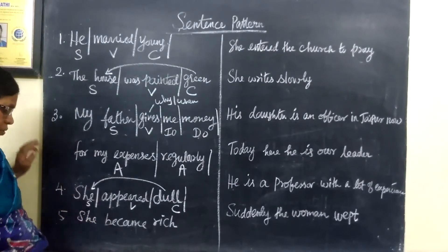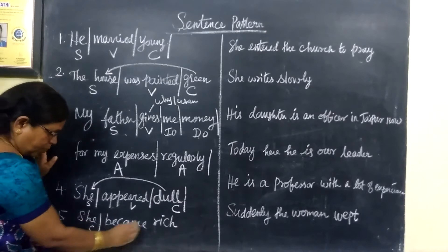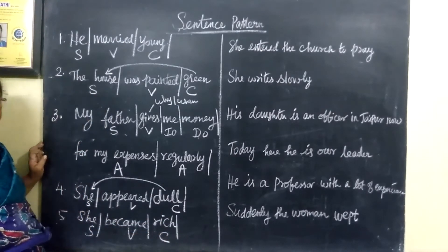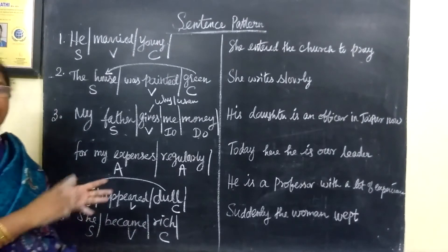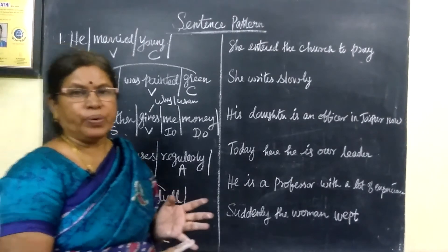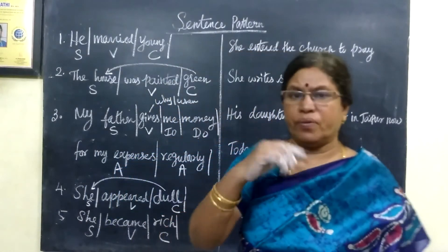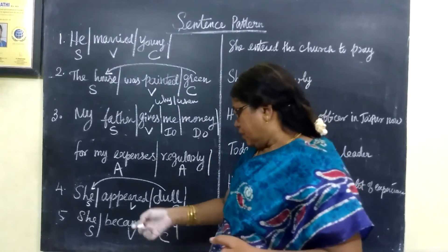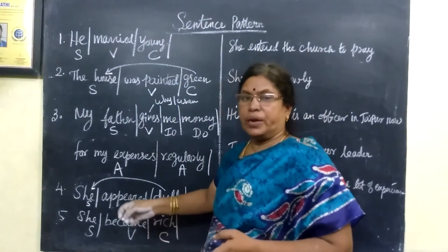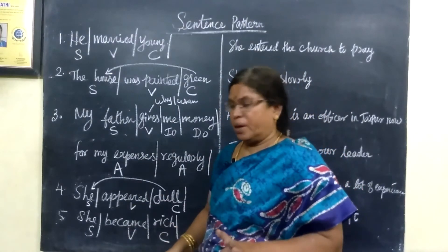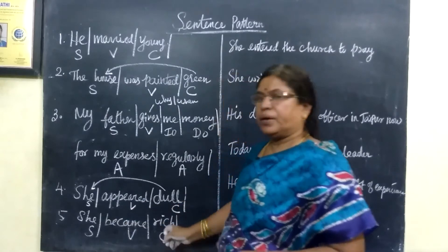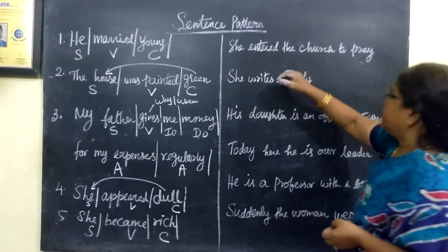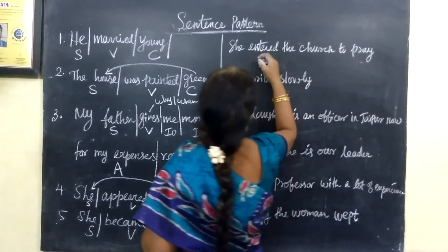Next: 'She became rich.' 'She' is the subject, 'became' is the verb, and 'rich' is the complement. Words like poor, rich — these are complements. The complement refers back to the subject.